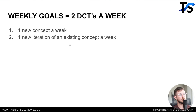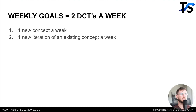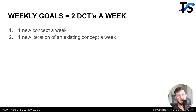Your weekly goals: one new concept a week, one new iteration of an existing concept a week — that's two DCTs a week. If you start spending more than $1,000 to $2,000 a day, then you can start doing four DCTs a week. You only want two DCTs running at a time outside of your main winning ad set.